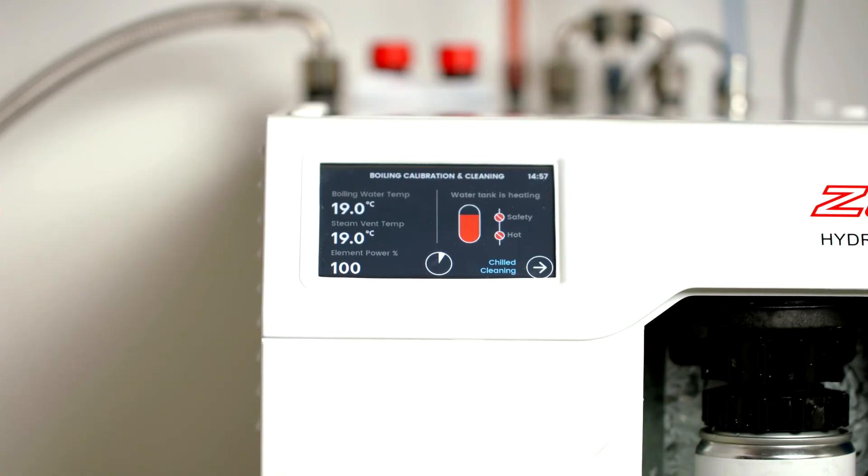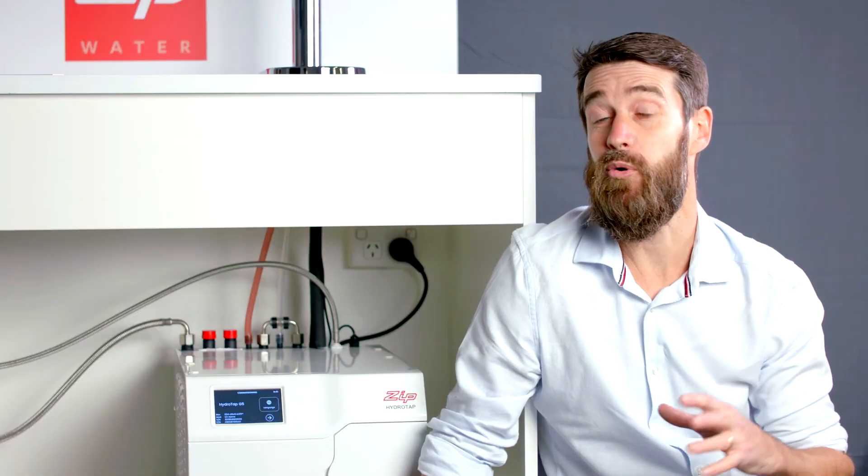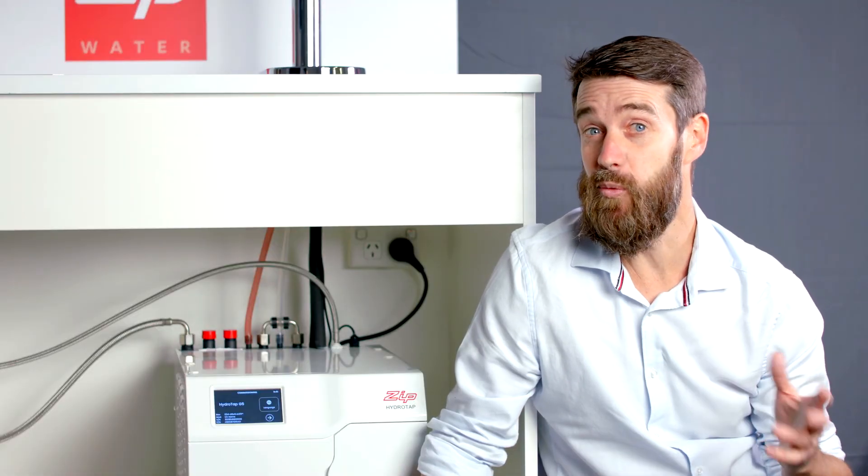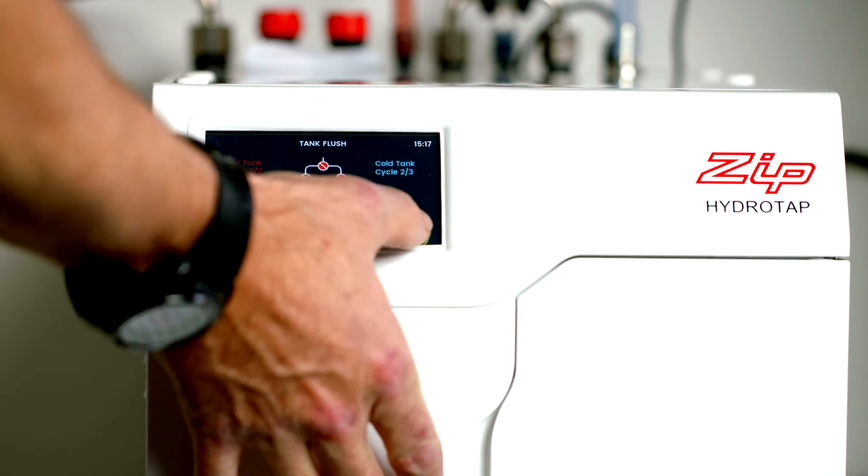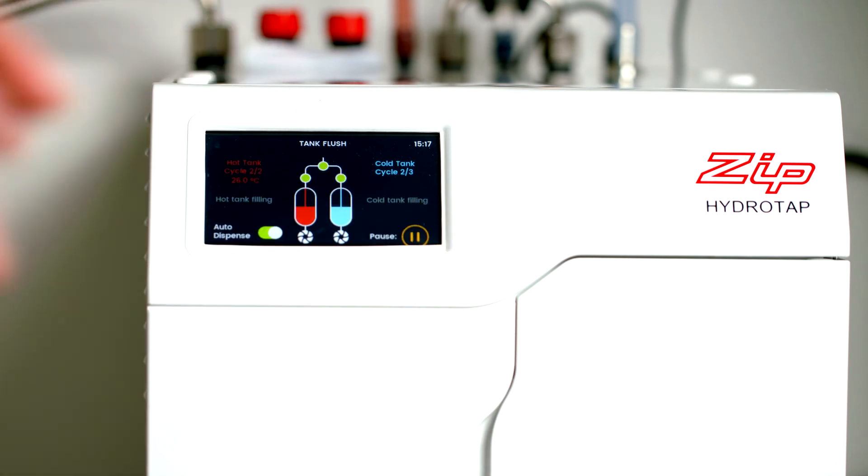Once the boiling calibration is finished a tank flush will need to be performed. This will happen automatically unless the boiling water temperature is over 50 degrees Celsius or you selected font at the beginning of the commissioning process. Press the play button to start. Once the boiling water temperature is below 50 degrees Celsius the tank flush will become automatic.